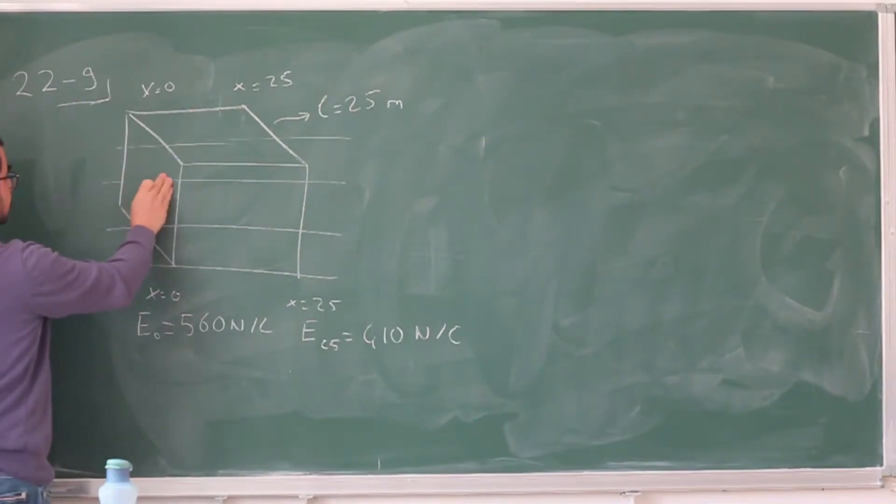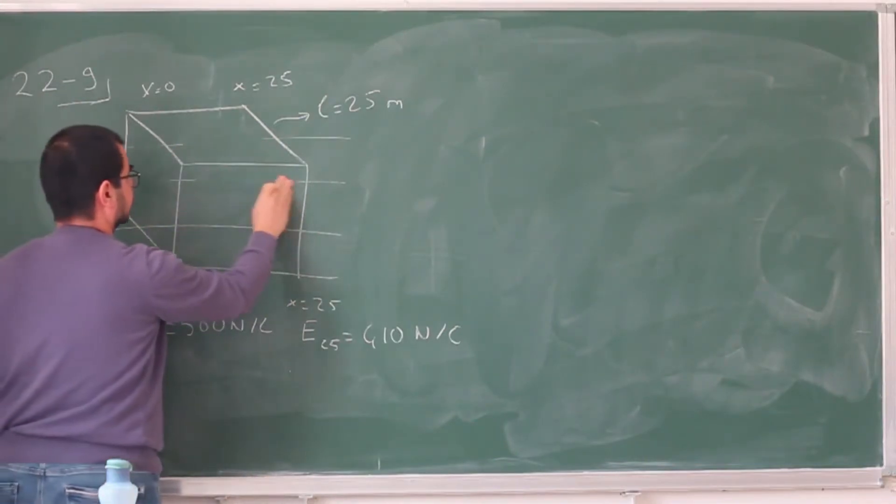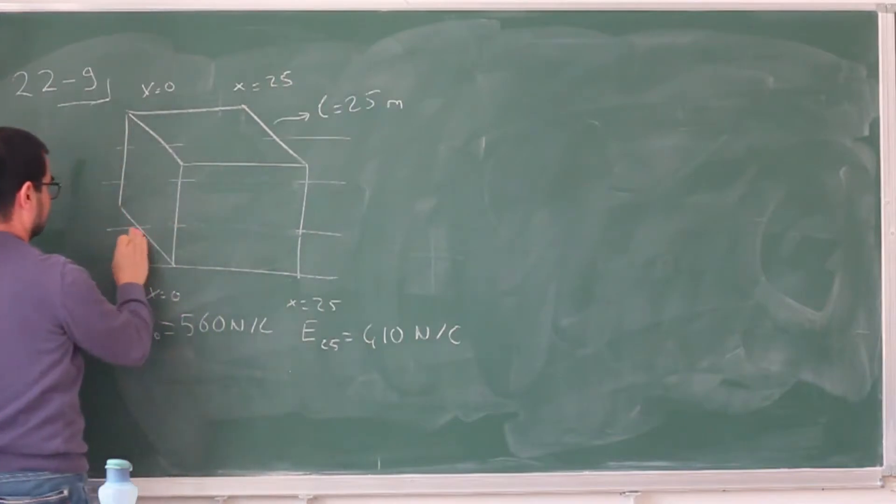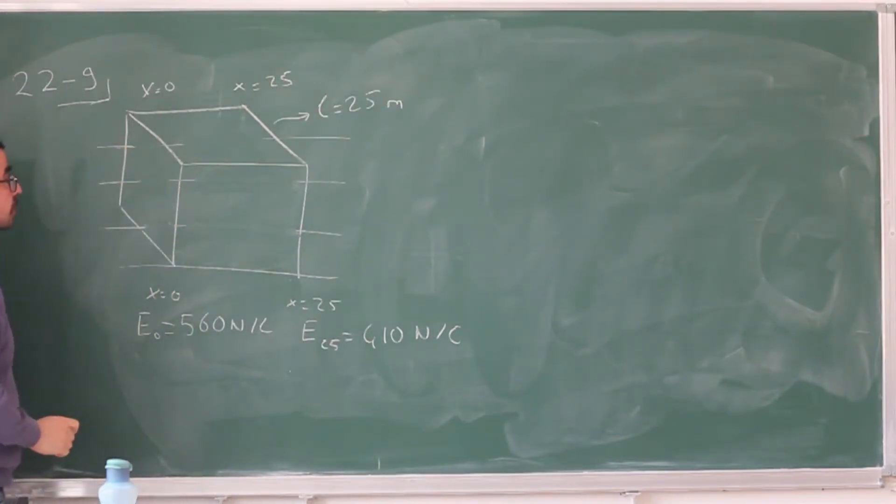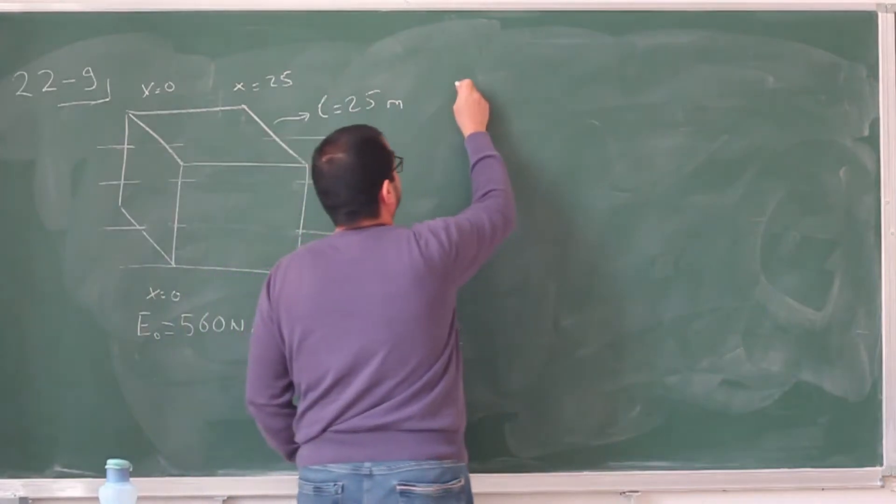And so, let's just erase the electric field lines over here. This is, of course, an application of Gauss's law. So that enclosed charge is going to be related to the electric flux. So let's write Gauss's law.